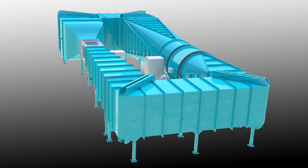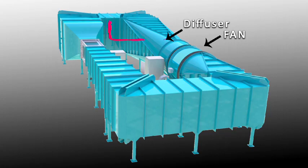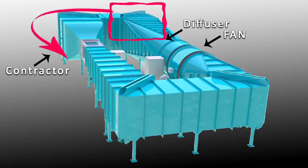This is a schematic of a closed-loop wind tunnel showing the fan section that blows the air through a diffuser and a settling chamber. It gets large here in this section because we want to slow the air down and allow the turbulence to decay.